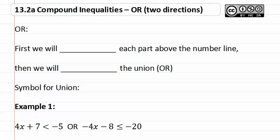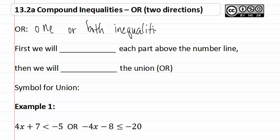Thirteen point two A: compound inequalities — or — with two directions. An 'or' inequality is one where one or both of the inequalities are true.